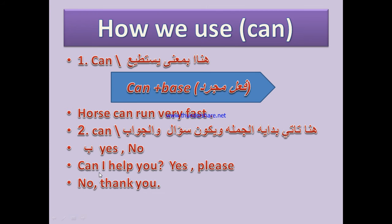When 'can' comes at the beginning of the sentence it makes a question — بمعنى هل تستطيع. The structure is: Can + subject + verb + subject 2 + question mark. These sentences are interrogative — جملة استفهامية. We put a question mark at the end. For example: Can I help you? Can she help you? Answer: Yes please / No thank you. This is how we use can.